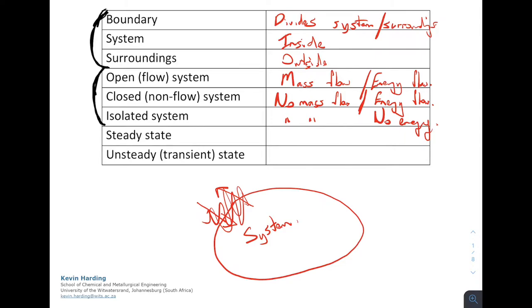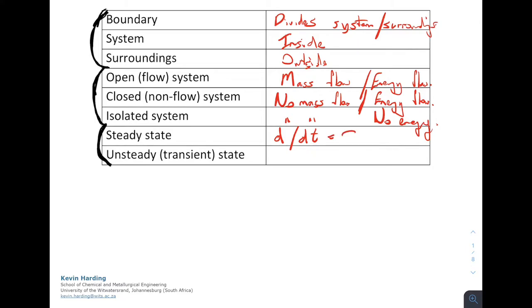The last one on this list, steady state versus non-steady state. We're going to come back to this one in a lot of detail, and there are already details of this in some of the other videos. But very briefly, if it's at steady state, we're going to define if anything changes with time. Steady state is when d/dt equals to zero, and unsteady state is when we have d/dt not equal to zero.